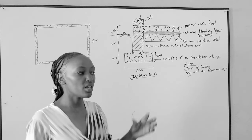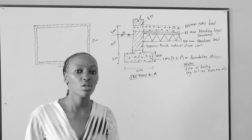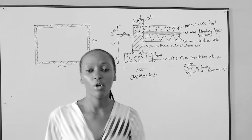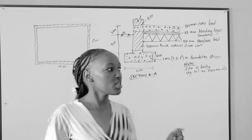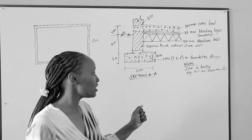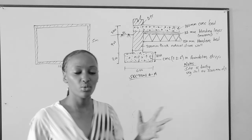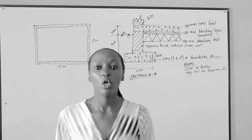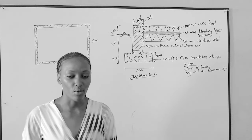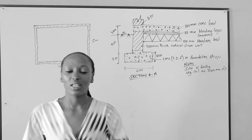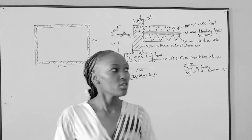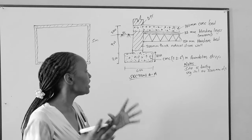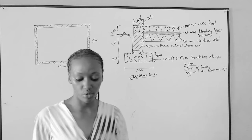For example, we shall bring the concrete in the foundation together with the concrete on the first floor, ground floor, and second floor. We shall bring the walls in the foundation together with the walls on the ground floor, first floor, and second floor, so that you can get the total area of the walls, total volumes of concrete, and totals for anything that is related.